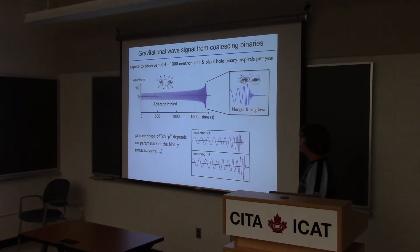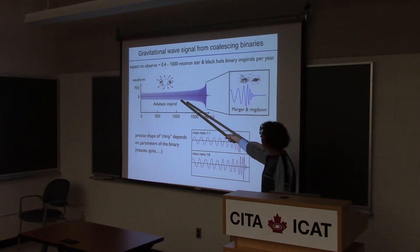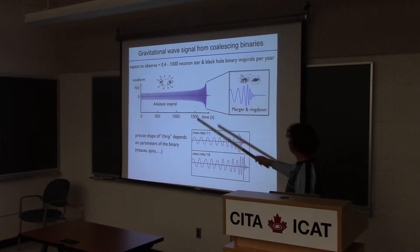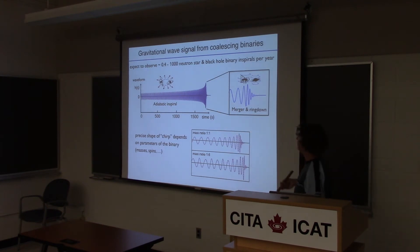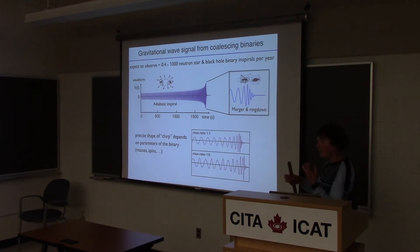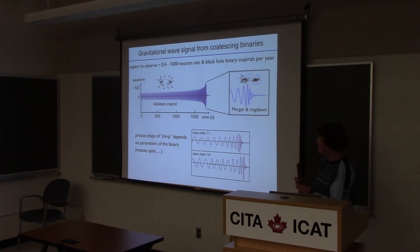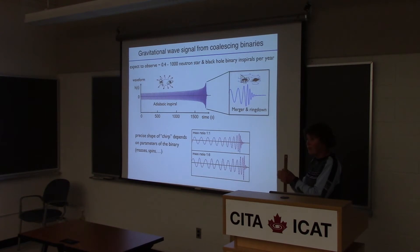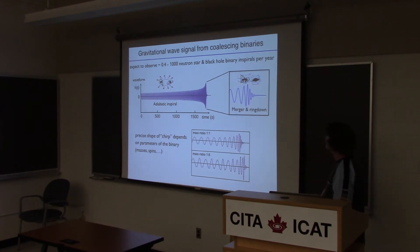The waveform from these binaries has a characteristic form. You see the gravitational waveform versus time: it oscillates and then chirps up in amplitude and frequency towards the end. It consists roughly of an adiabatic inspiral where the two objects orbit one another, lose energy and angular momentum to gravitational waves, so the orbit shrinks. As they get closer, the frequency increases. Finally, the orbit becomes unstable, the two objects collide and form a single highly perturbed black hole that rings down with decaying oscillations.